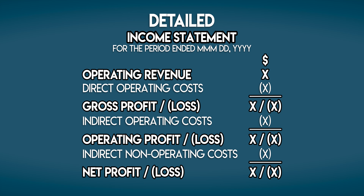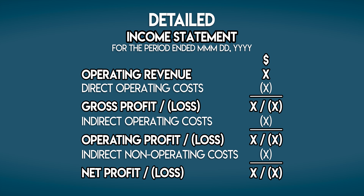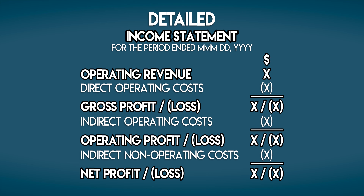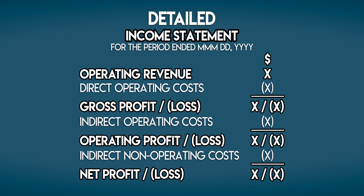At the top, we have operating revenue, which is the income earned from doing business, and then we take away any direct operating costs. These are the cost of sales, and that leaves us with a gross profit or a loss.